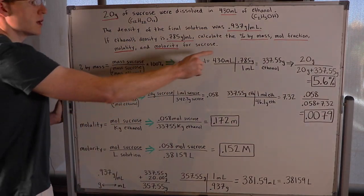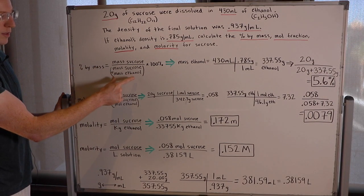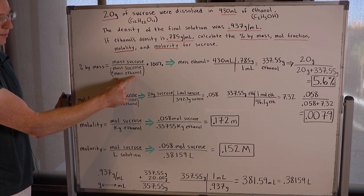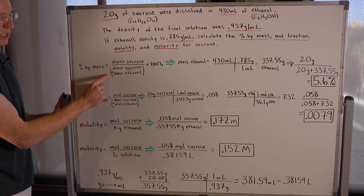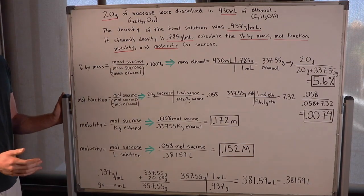So for the first one, percent by mass, we know this is going to be mass of sucrose over the total mass of the solution, which is mass of sucrose plus mass of ethanol in the denominator. And of course we're going to multiply that by 100 to obtain a percentage.